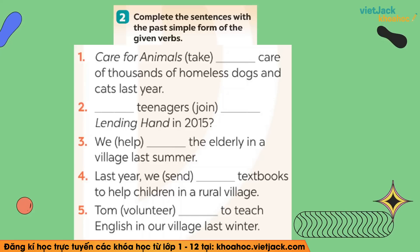Hãy pause màn hình lại một chút và tự làm nhé, sau đó hãy check đáp án cùng với cô. Với câu số 1, mình có keyword last year (năm ngoái) — quá khứ của take là took. Tiếp theo, number 2: keyword là in 2015 — bây giờ đang là năm 2022, nên in 2015 chính là a past time. Ở đây còn là một câu hỏi nữa, vì vậy mình sẽ phải đảo trợ động từ did lên trước chủ ngữ: Did teenagers join hands in 2015? Đằng sau trợ động từ did thì động từ sẽ là dạng nguyên thể.